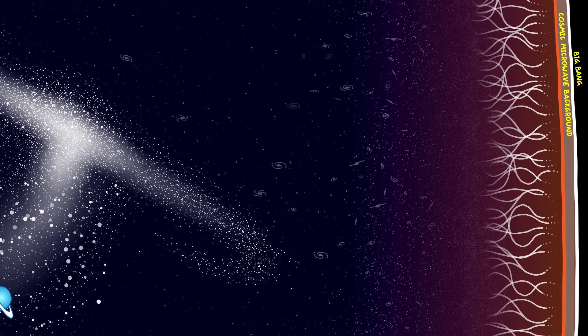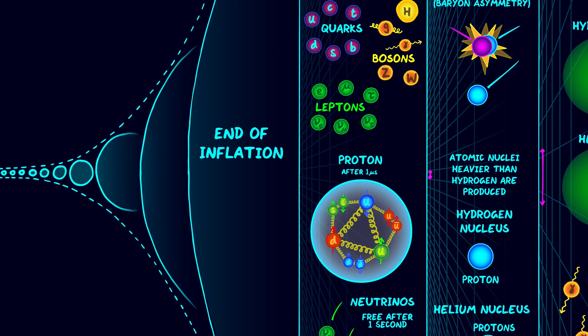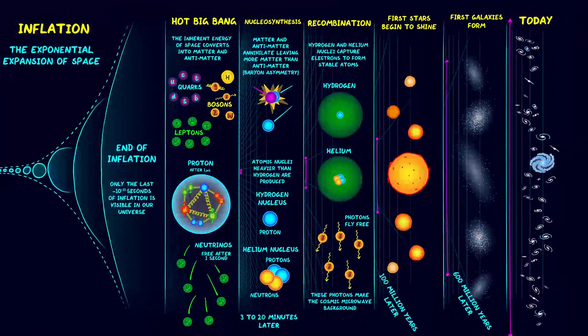Potentially we can detect primordial gravitational waves from before this time, but this will need a huge space interferometer. And even with the most idealised experiments we can conjure up in our minds, we could only ever probe the last fraction of a second of inflation, 10 to the minus 33 seconds. We can never see further back than that because the information simply doesn't exist in our universe.